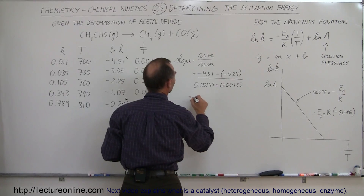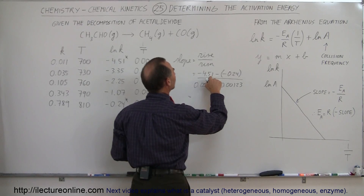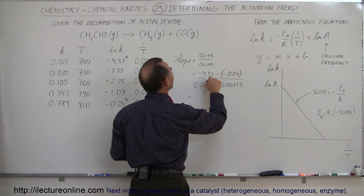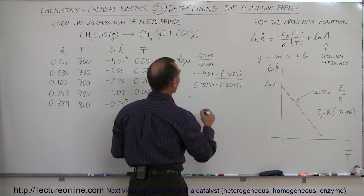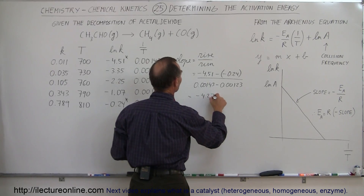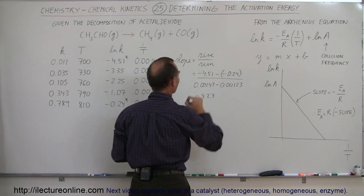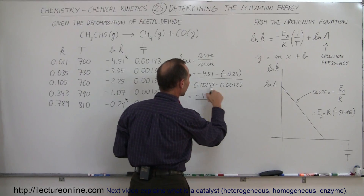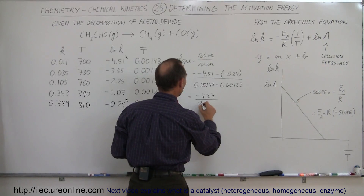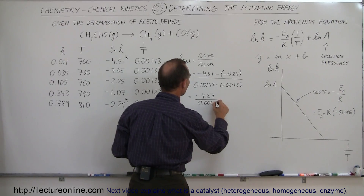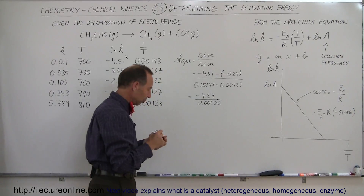So this is equal to: the negatives give us a positive 0.24 added, that would be −4.27, because 0.24 plus 0.27 is 0.51. Divided by the difference between those two values, which is 0.00020. So that equals the slope.